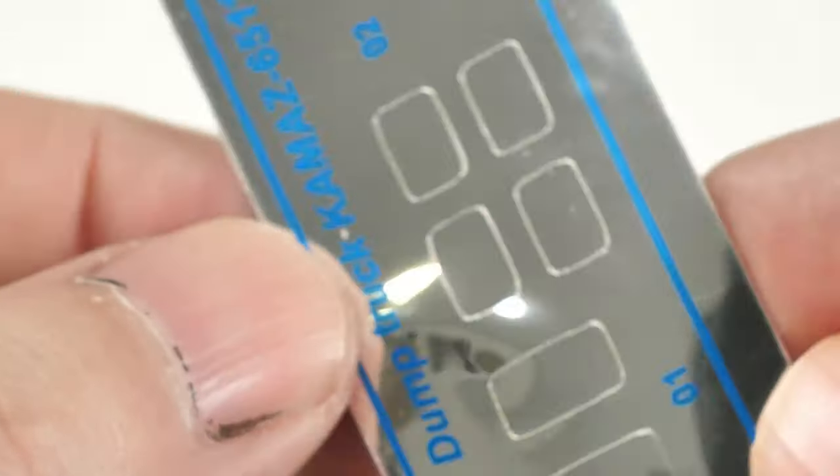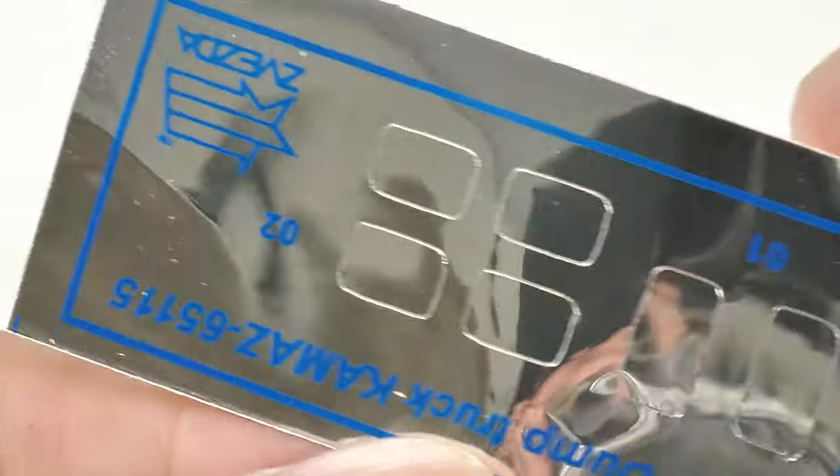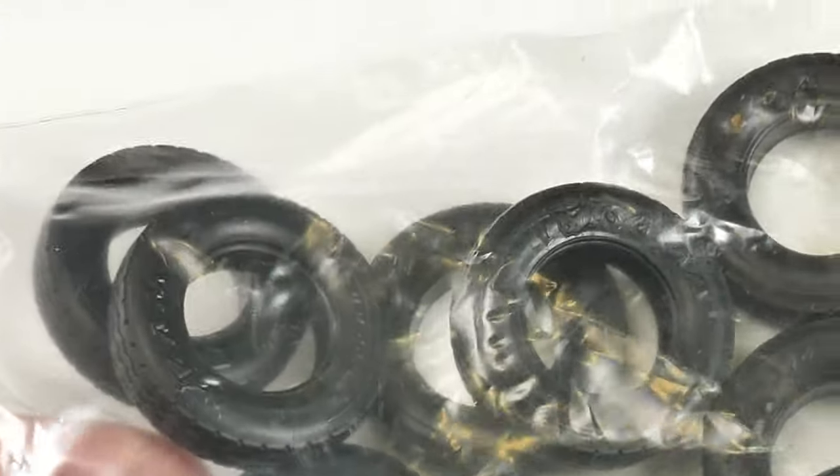Here's a nice little feature that you get with some of these Zvezda kits as well. You get the mirrors on a chrome sticker sheet, so you can just, self-adhesive, simply stick them on. You've got excellent mirror surface. Here's the bag of tires. Let's have a look at these.